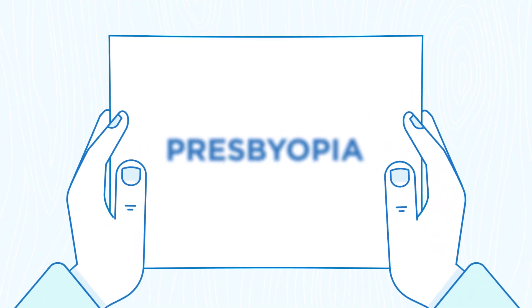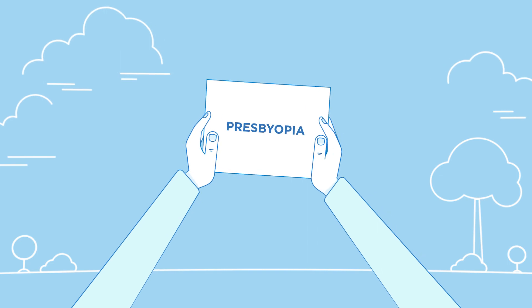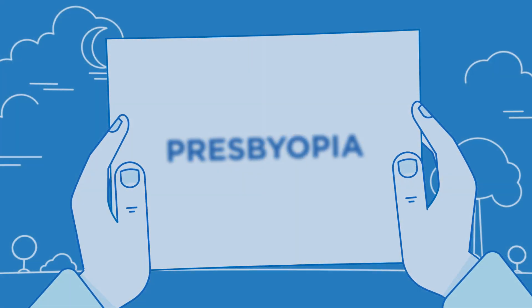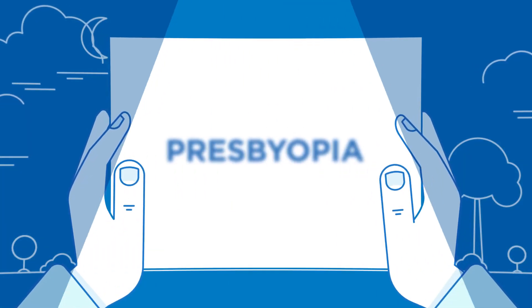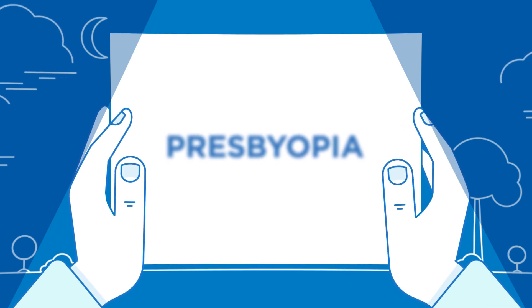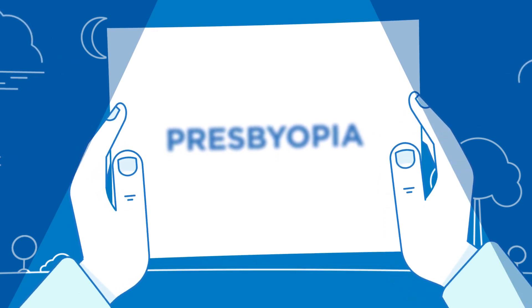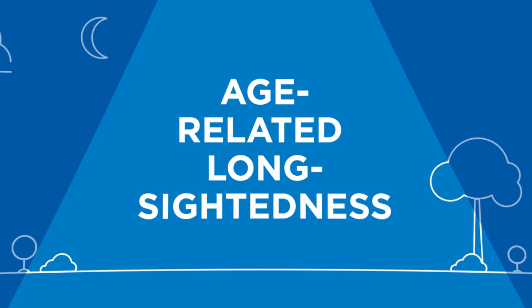Do you struggle to read small print? Or hold things at arm's length to focus? Do you feel you're straining your eyes, especially in dim light? Then you're probably experiencing presbyopia or age-related long-sightedness.